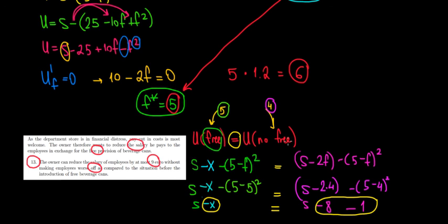So indeed the reduction in salary would be equal to 9 euros by keeping the utility equal between having free coffee and not having free coffee. So 9 euro reduction in salary in exchange for free coffee. And the answer here is true. And we are done.